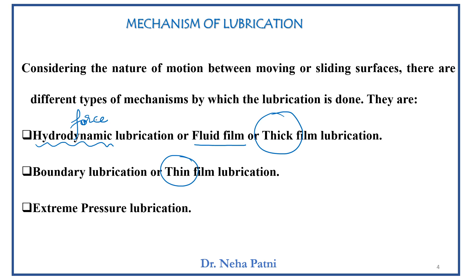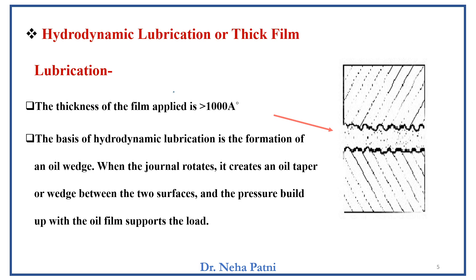The second type is thin film lubrication — the thickness of the film applied to the machine is comparatively thinner. It acts like a boundary between the two surfaces, which is why another name for it is boundary lubrication. The third type works only when the machine is operating under extreme pressure conditions. Let us now discuss them one at a time. For thick film lubrication, the thickness has to be high.